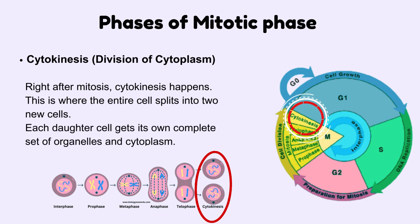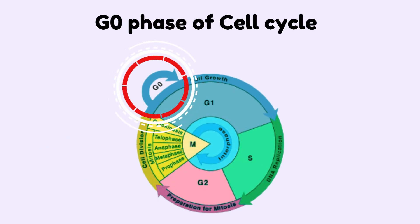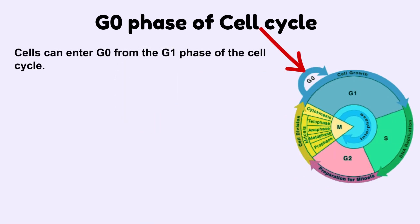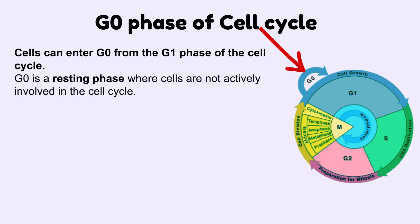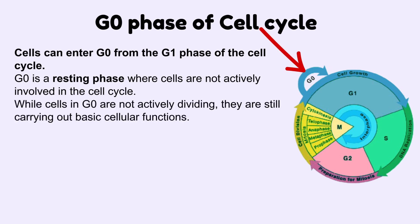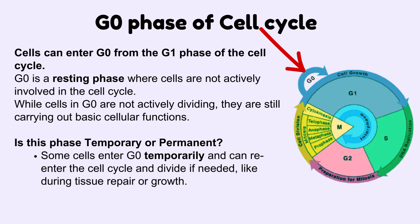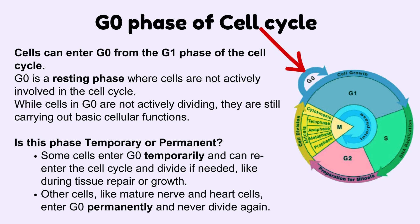A special phase is the G0 phase of the cell cycle. Cells can enter G0 from the G1 phase. G0 is a resting phase where cells are not actively involved in the cell cycle, though they are still carrying out basic cellular functions. Some cells enter G0 temporarily and can re-enter the cell cycle and divide if needed, like during tissue repair or growth. Other cells, like mature nerve and heart cells, enter G0 permanently and never divide again.